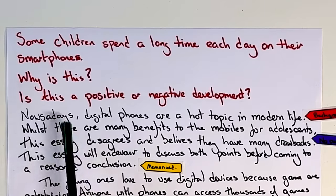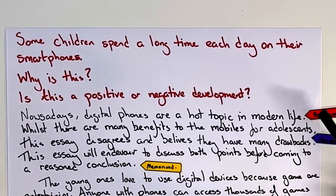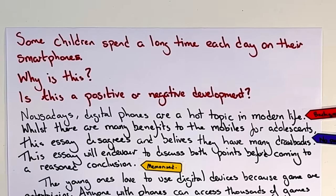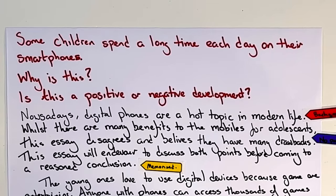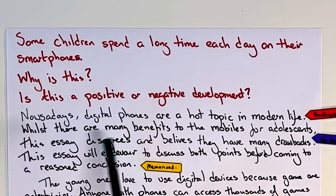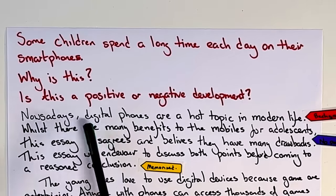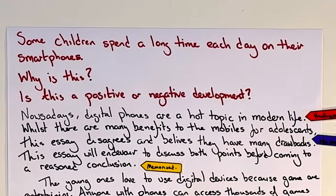Let's start off with the first sentence: 'Nowadays' — spelt incorrectly — 'digital phones are a hot topic in modern life.' This is known as a background sentence. Many teachers and schools teach students to memorize some kind of background statement and put it in as the first sentence of their essay. What they normally do is tell students to put whatever the main topic is — they memorize something like 'nowadays [topic] is a hot topic in modern life.' Now there are a few problems with this.